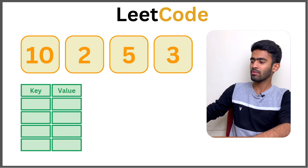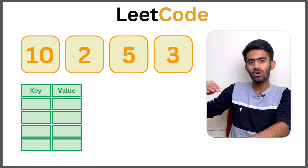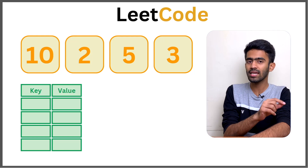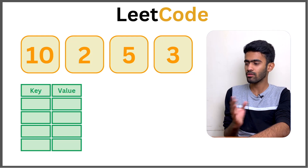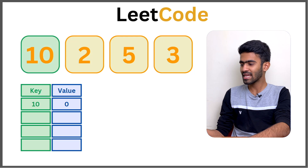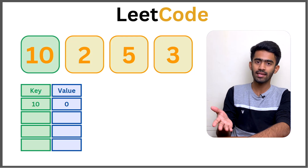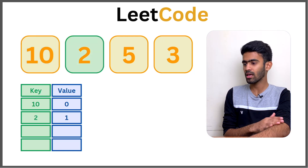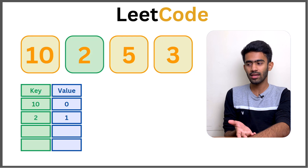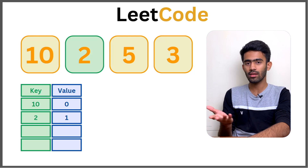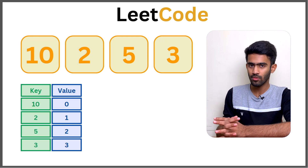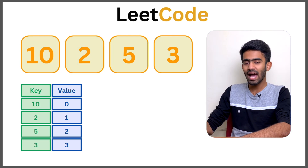The key is the value itself and the value stored is the index. So if the first value is 10, the index is 0. The next value's index is 1. Then 5 at index 2. Then 3 at index 3. So the hash map now has all four entries.